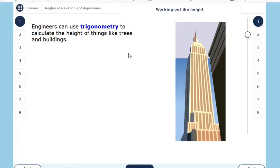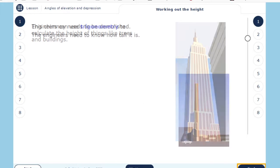Hello, this is Maths with Lemon, and in this topic we will see the angles of elevation and depression. Engineers can use trigonometry to calculate the height of things like trees and buildings.